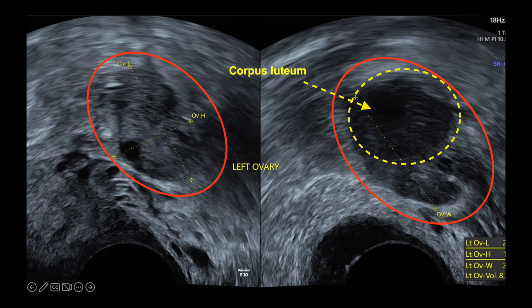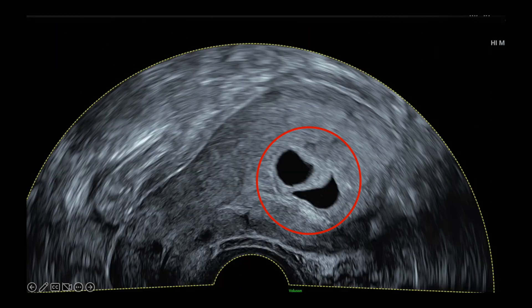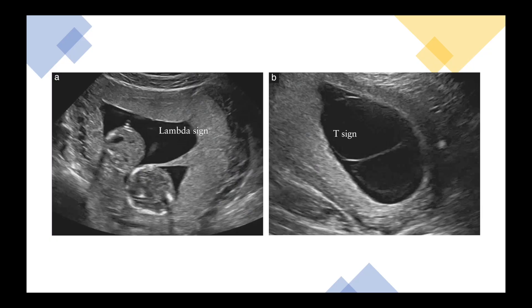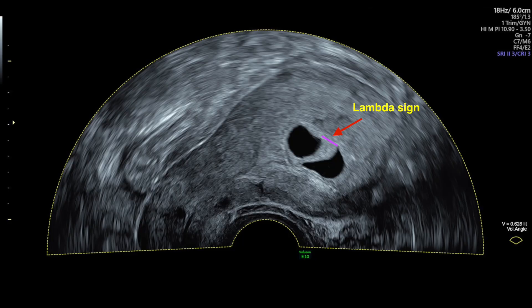The left ovary released an egg in this cycle, and this is a corpus luteum, known as an egg shell. This is a picture showing two gestational sacs, suggestive of a twin pregnancy. In twin pregnancy, the lambda sign is a thick inter-twin membrane suggestive of dichorionic pregnancy, and the T sign is a thin membrane suggestive of monochorionic pregnancy.